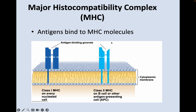Looking at a model of the MHC: antigens bind to MHC molecules. Here we have our cell membrane with the phospholipid bilayer. The dark blue on the left represents the class 1 MHC proteins, which are present on every nucleated cell — basically most cells in your body except red blood cells. They have antigen binding grooves, a special receptor site on the extracellular side; the top is the outside of the cell and the shaded area at the bottom is the inside.